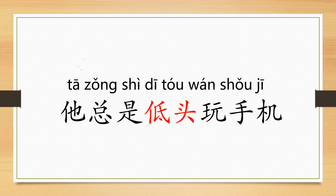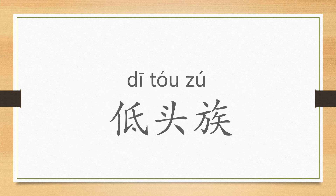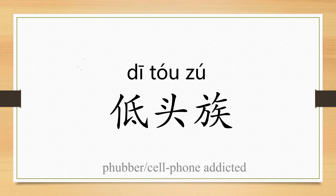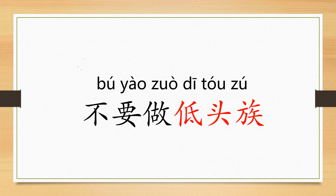她总是低头玩手机. 总是 means always, 玩手机 means play cell phone. 她总是低头玩手机 — she always bows her head to play mobile phones. 低头族. 族 means tribe. 低头族, 低头族. 不要做低头族 — do not be a phone addict.